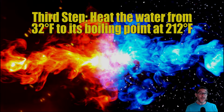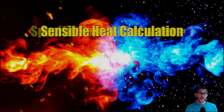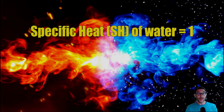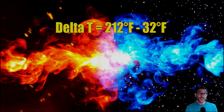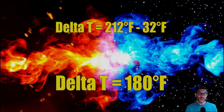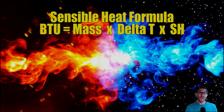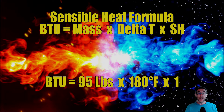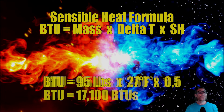Third step: let's take this 95 pounds of water and heat it from 32 degrees Fahrenheit all the way up to its boiling point, which is 212 degrees Fahrenheit. This is a sensible heat calculation. The specific heat of water is 1. The delta T is 212 minus 32 degrees Fahrenheit, which gives a nice round number: 180 degrees Fahrenheit. Plugging into the formula — BTUs equals mass times delta T times specific heat, or 95 pounds times 180 times 1 — we get 17,100 BTUs. We're going to write that down for later.